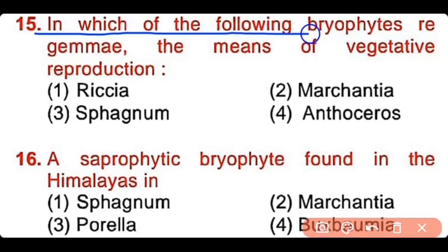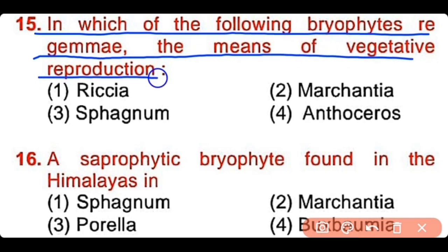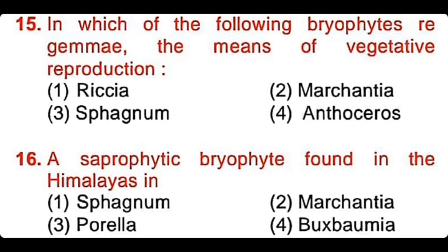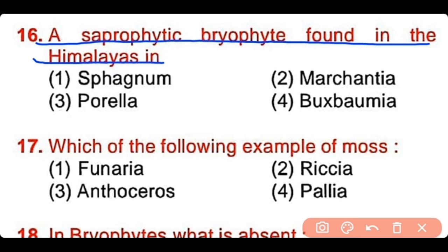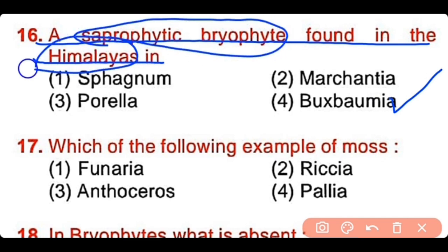Question number 15: In which of the following bryophytes are the gemma or gemmules, the means of vegetative reproduction, present? Riccia, Marchantia, Sphagnum, or Anthoceros. The correct answer is option 2 — Marchantia has gemma or gemmules used for vegetative reproduction. Question number 16: A saprophytic bryophyte found in the Himalayan region is Sphagnum, Marchantia, Furila, or Buxbaumia. The correct answer is option 4. Buxbaumia is a saprophytic bryophyte found in the Himalayan region.